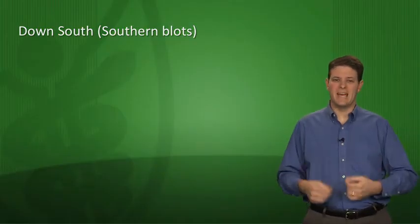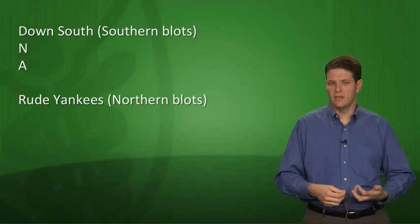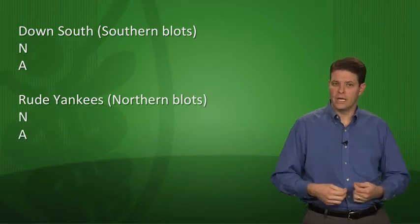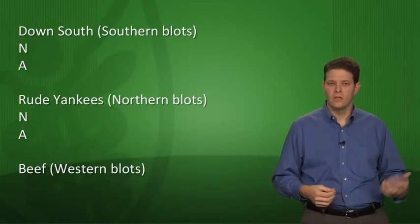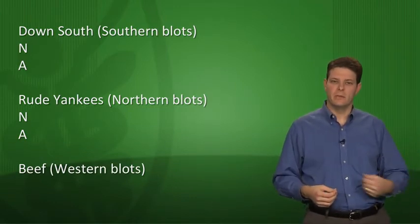As a quick mnemonic for what kind of samples each blot uses, a student from South Alabama sent in this: for southern blots, think down south, and the D in down south should make you think of DNA. For northern blots, think about rude Yankees, and that R is for RNA. And then for western blots, think about cattle ranches out west. West is where we get beef. Beef is protein.